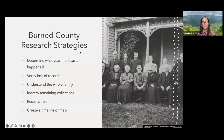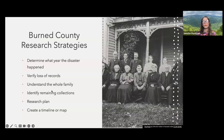There are 3,142 counties, parishes, and equivalents in the United States, and 689 of them have suffered at least some record loss. Kentucky, North Carolina, Georgia, Texas, and Missouri are states that have suffered a lot of record loss. Georgia, Kentucky, and Tennessee are the top three. The Civil War is not a very big reason for record loss overall. In Georgia, about 80 of the total counties are burned, and similarly in Kentucky — which has only about 120 counties — so Kentucky has pretty serious record loss.